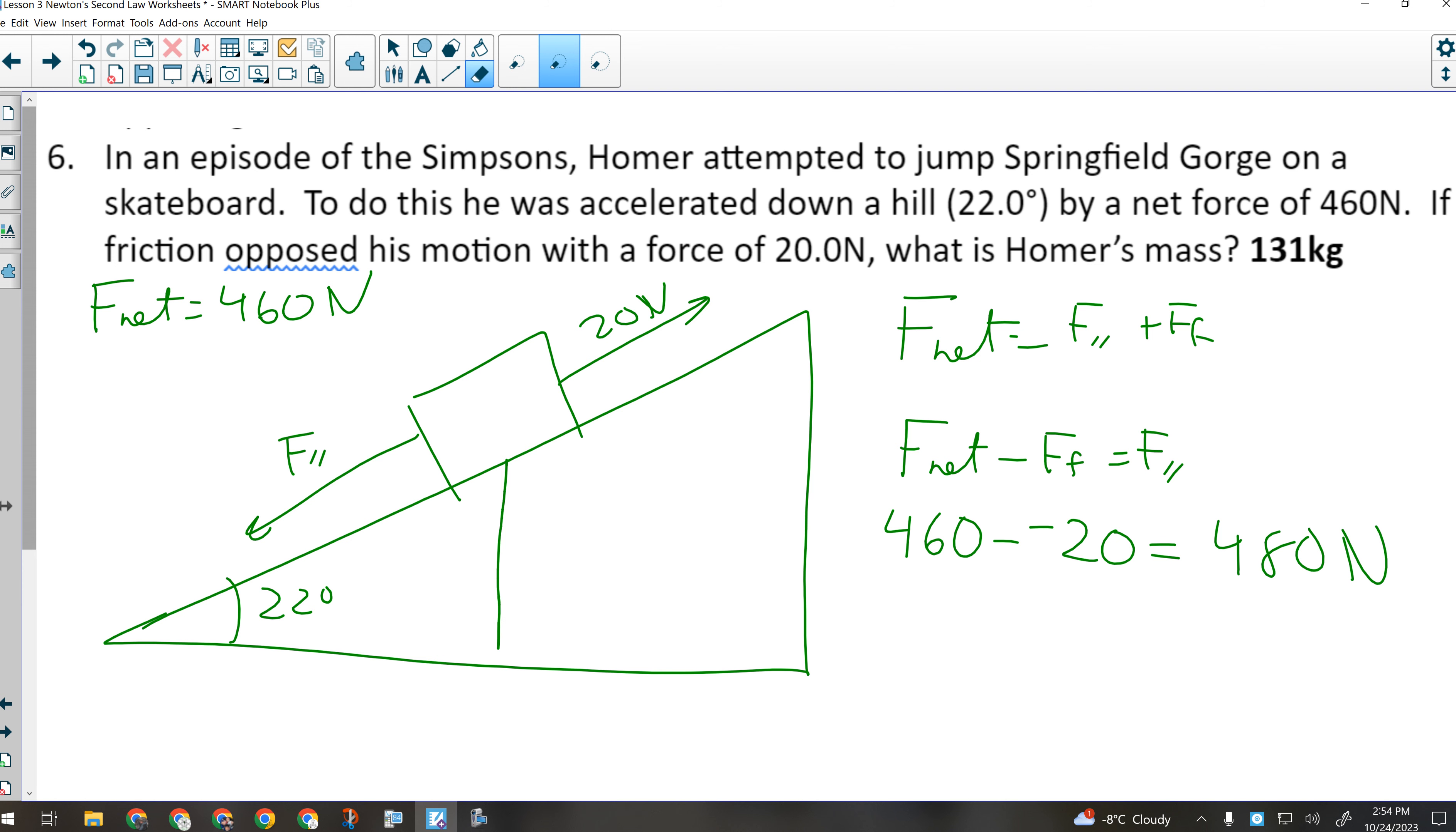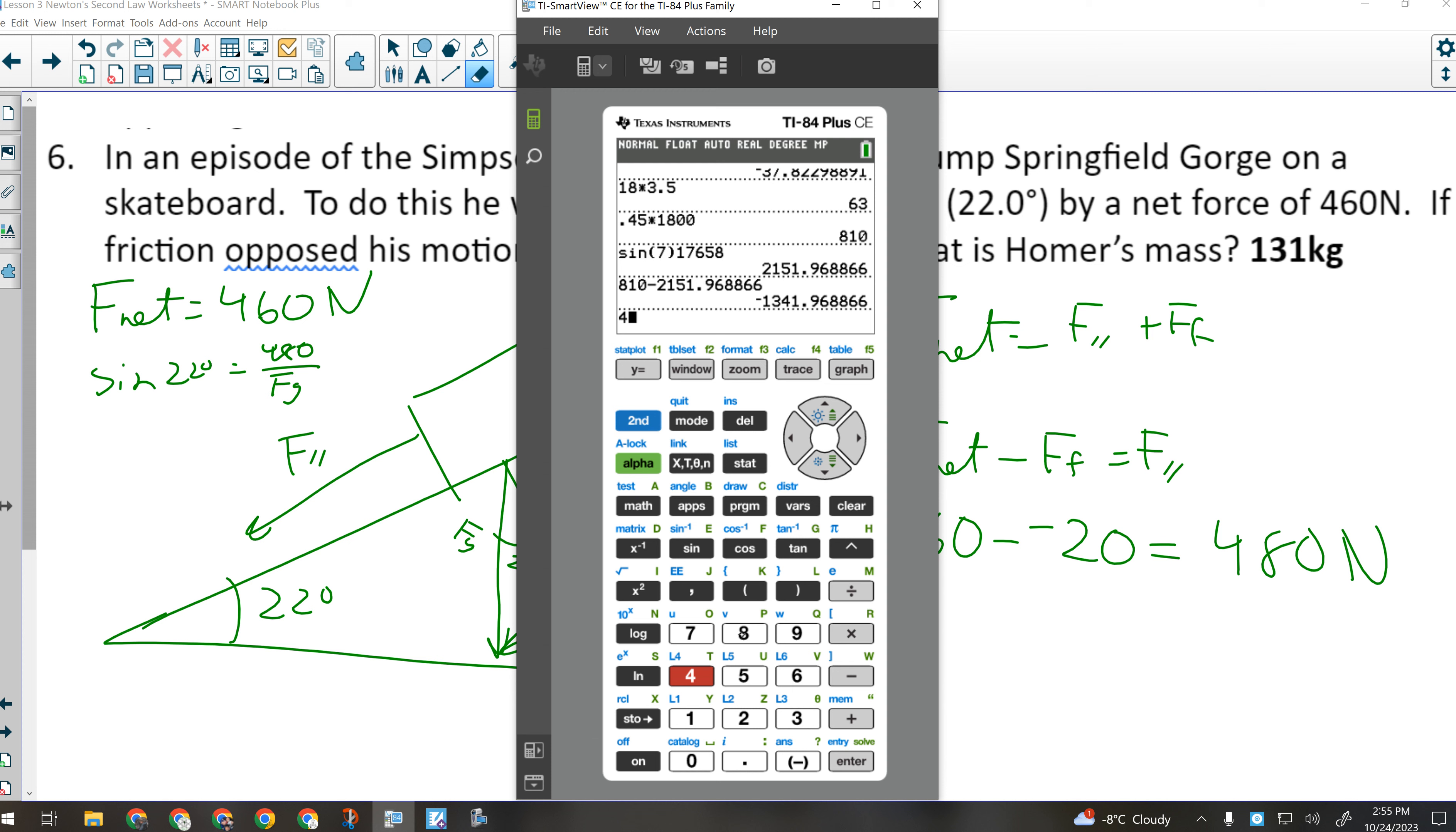all right? That is going to give me an F parallel of 480 Newtons. Now, you might be looking at this and going, so what, Cotierre? How does that help me? I'm looking for mass. Well, here's how it helps you. I now know what F parallel is. It's 480 Newtons. Can that help me get the force of gravity, which would be Homer's weight? Can I use Homer's weight to get his mass? Yes. So I'm going to solve for Fg. I'm going to say that the sine of 22 degrees equals 480 over Fg, and just manipulate for Fg. So that's going to be 480 divided by the sine of 22 degrees.